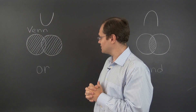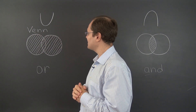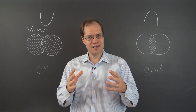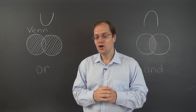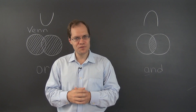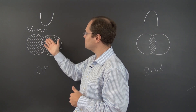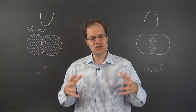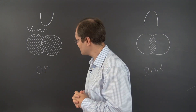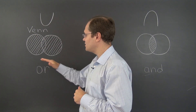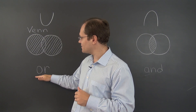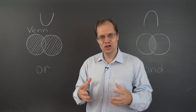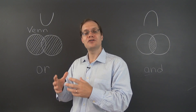The best way to understand what a union is, at least on an intuitive level, is to look at a Venn diagram. The two possibly overlapping sets are represented by circles, and their union is represented by the shaded region — it's the combination of the two sets together. The union consists of elements that are either in one set or the other, or both. You only need to be in one of the sets in order to be in the union.